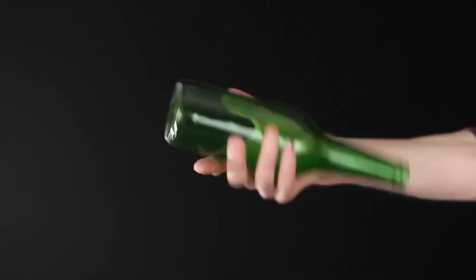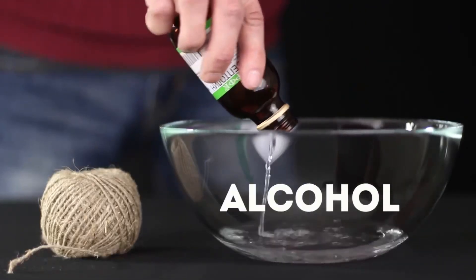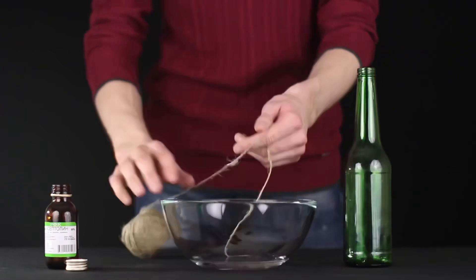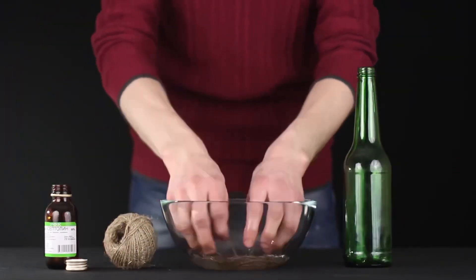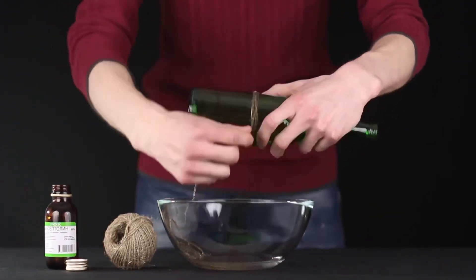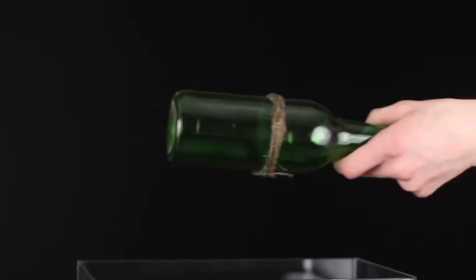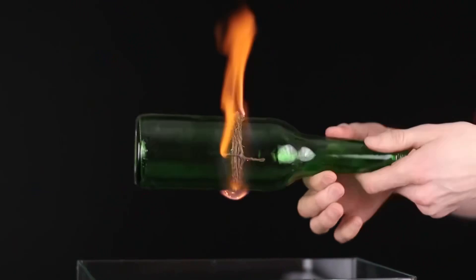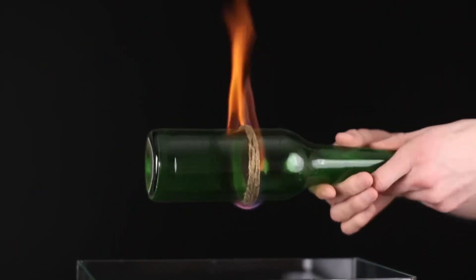Let's take an ordinary glass bottle. Pour alcohol into a bowl and dip a bonded twine into it. Soak it well and wrap it around the center of the bottle. We set it on fire and begin to turn the bottle smoothly while the fire is burning.